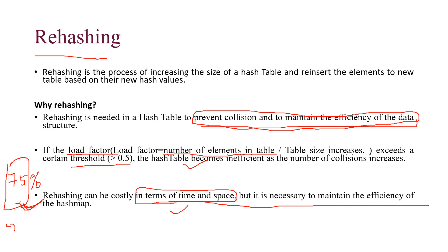If the table size was 10, you double it to get 20. But rehashing says do not take the doubled value if it is not prime. Always double the table size and ensure that new size is a prime number. So if my table size is 10 and I double it to 20, 20 is not acceptable. The new table size should be the next immediate prime number greater than the doubled value, which would be 23.